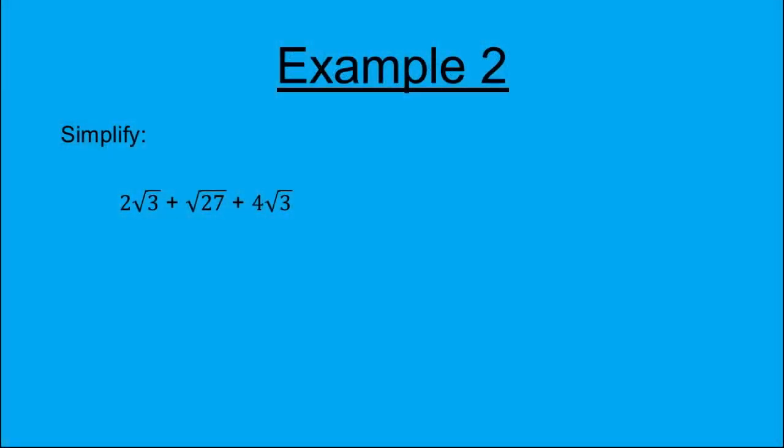Example 2. Simplify 2√3 add √27 add 4√3.